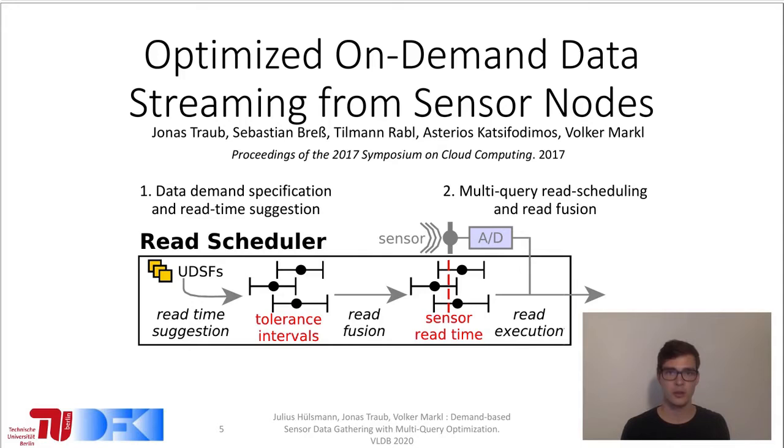In our full paper, Optimized On-Demand Data Streaming from Sensor Nodes, Traub and others propose a solution to mitigate this problem. They introduce techniques for demand-aware streaming from sensor nodes, aiming to acquire and transfer data only to the query's data demands. The contributions are twofold.